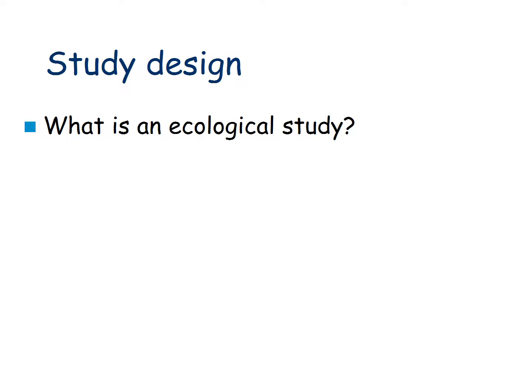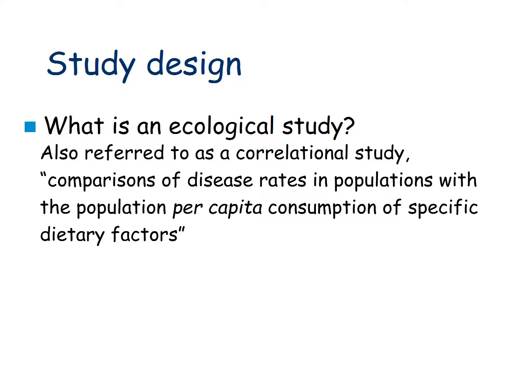The first type of study design is an ecological study, also referred to as a correlational study. Imagine you have a large graphic comparing disease rates — for example breast cancer — in populations with population-level or per capita consumption of a specific dietary factor or some other exposure. Without any individual-level information, it's a first-level type of study often done with little resources that can help explore possible avenues for research.